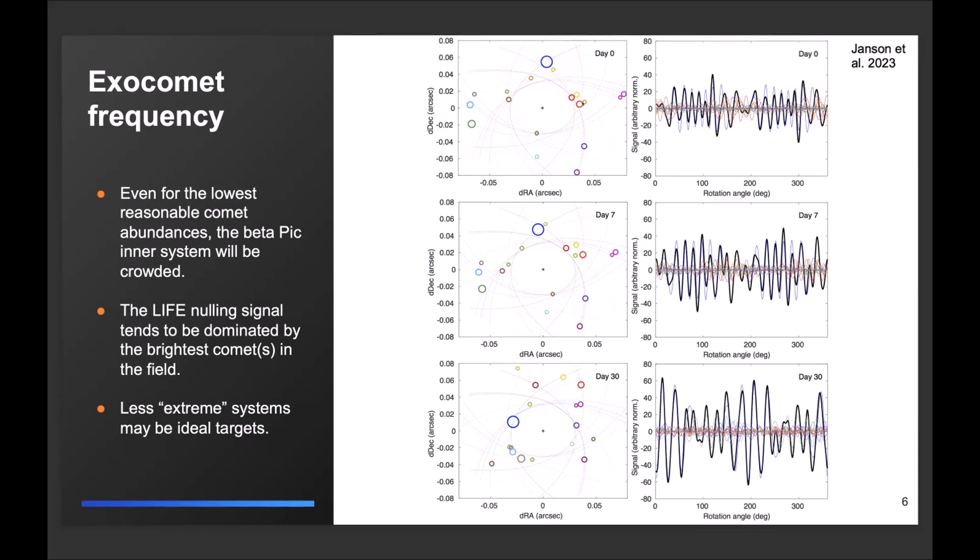And so basically every colored line here corresponds to the individual component that you would measure if you had only one of these comets. So this fairly strong blue line here corresponds to this large comet here, with a blue ring here. And then the black line is the total signal basically from all of the comets altogether in the system. And so what you can see really here is that this large comet really contributes to a large fraction of the signal. And especially when it gets closer to the star, because then it gets hotter. And so as it gets closer to the star, the interferometric amplitude becomes larger.